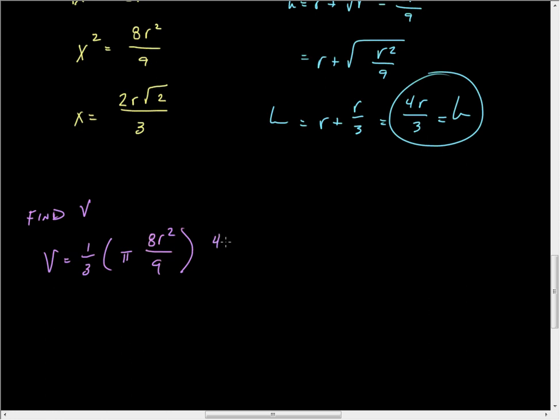And so when we do this, we have 32, let's see, this is going to be pi, so 32 pi R cubed over 81. And that would be the volume.